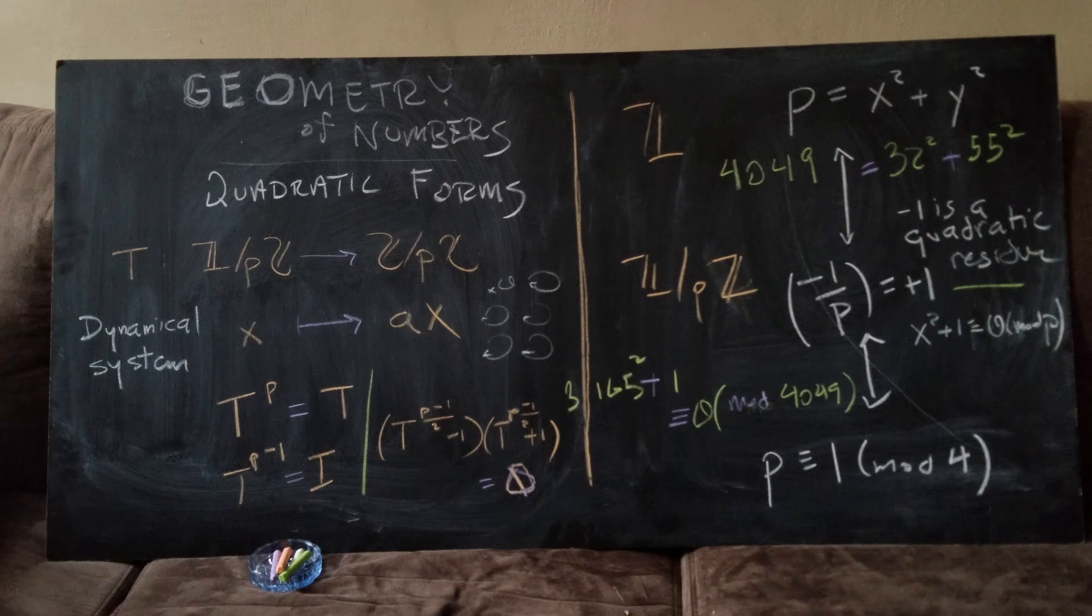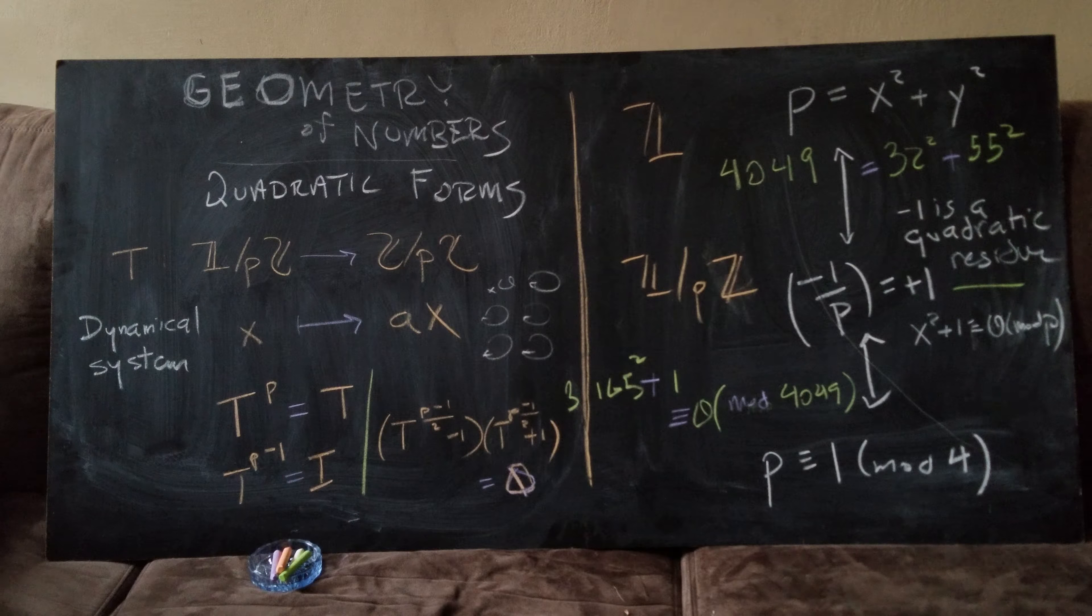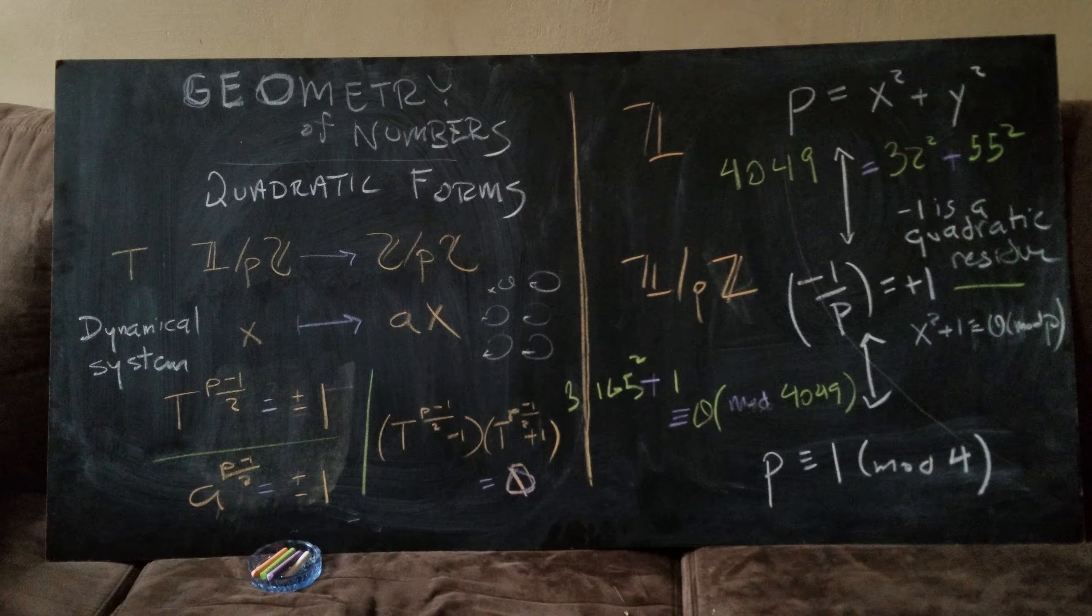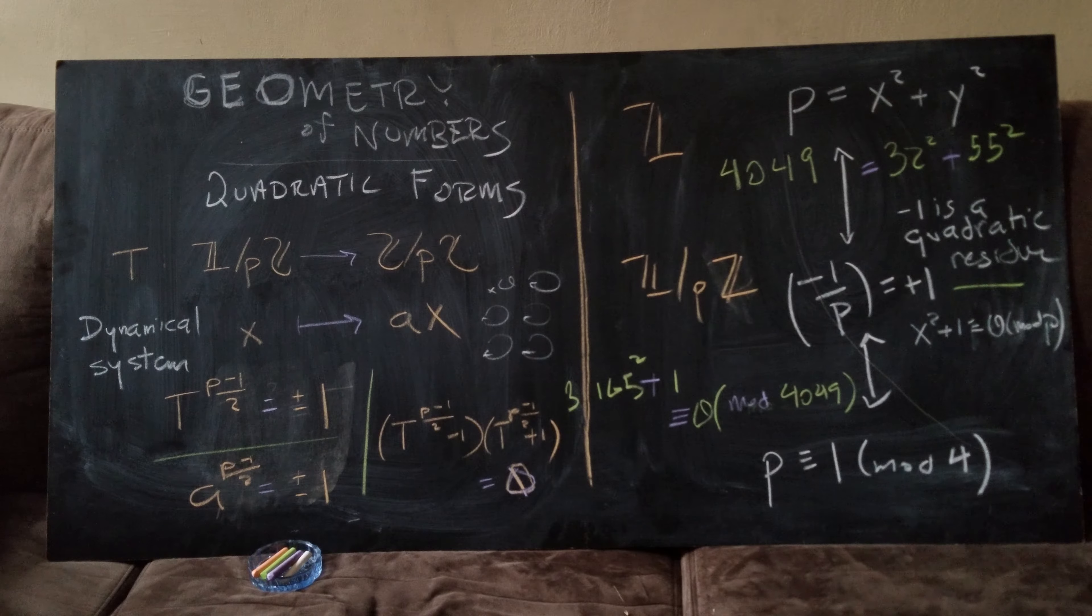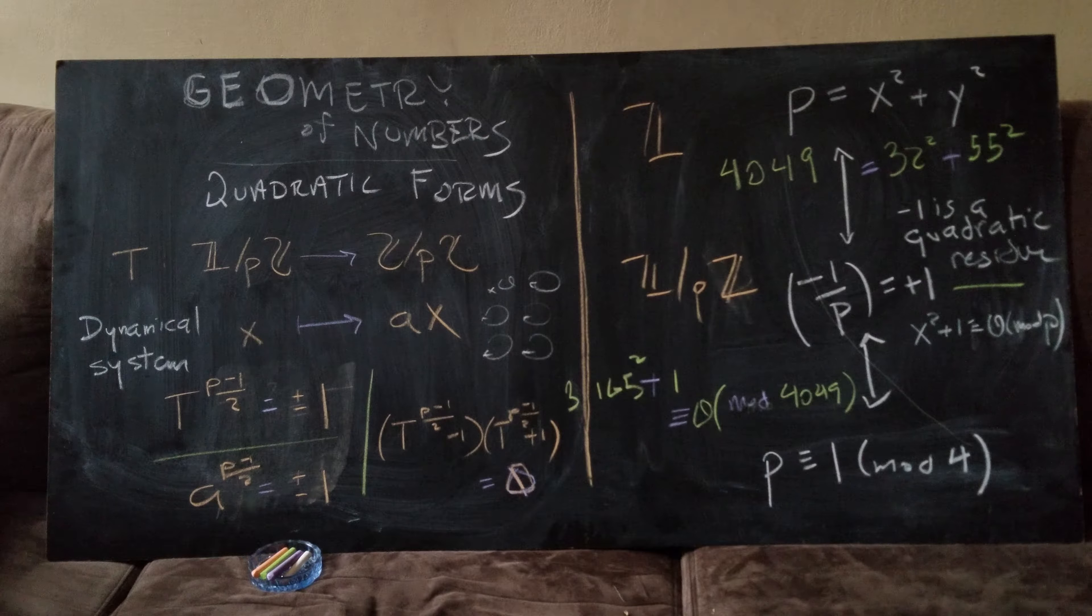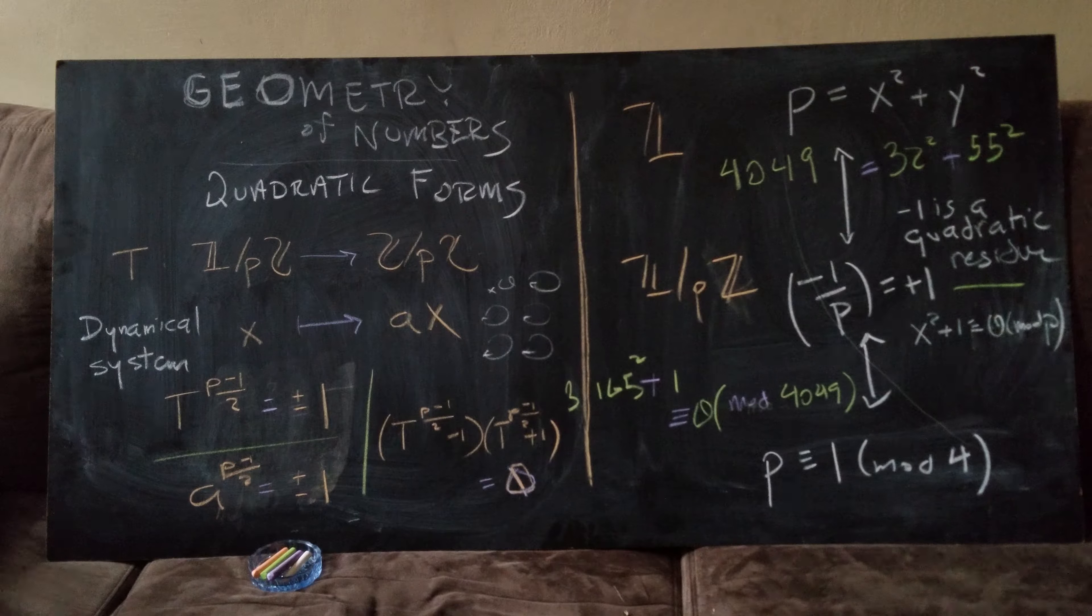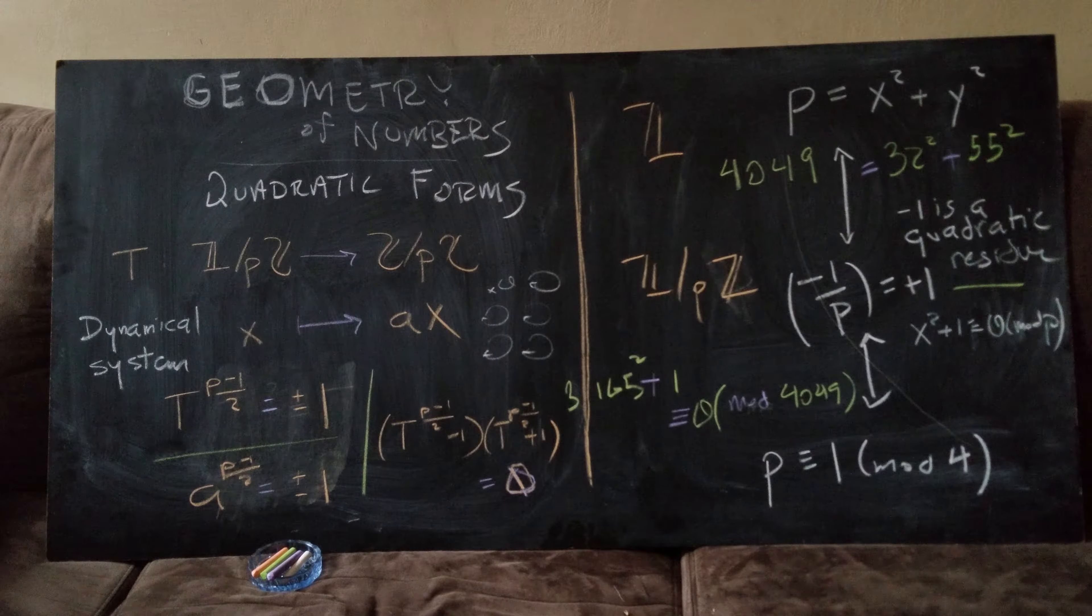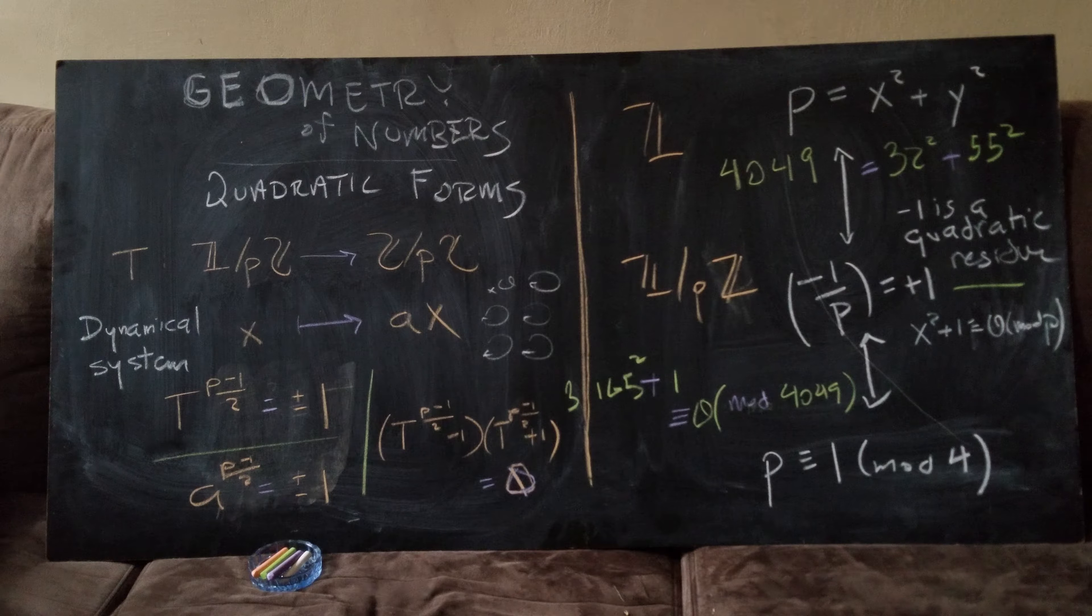It's going to behave like one or it's going to behave like minus one. So if we run it, cut it in half, if we run T p minus one over two times we either get one or minus one. So a to the p minus one over two should be plus or minus one.